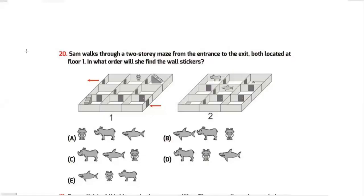Question 20: Sam walks through a two-story maze from the entrance to the exit, both located on floor one. In what order did she find the wall stickers? This is the entry and this is the exit, both on floor one. It's a two-story building with floor one and floor two.